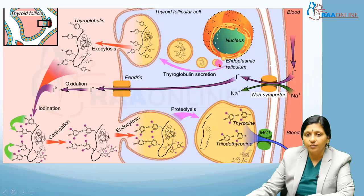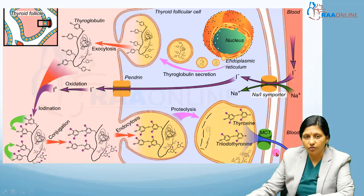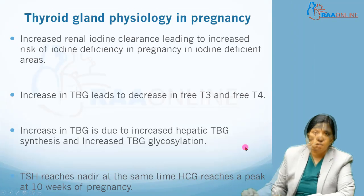This thyroglobulin secretion is from the nucleus of the follicle cell, and this is how there is synthesis and exocytosis of T3 and T4 in the thyroid gland.